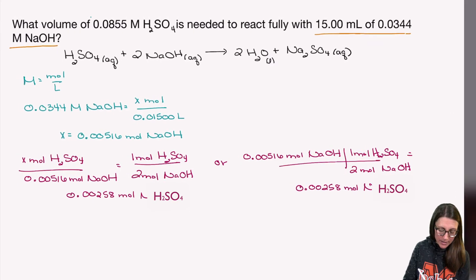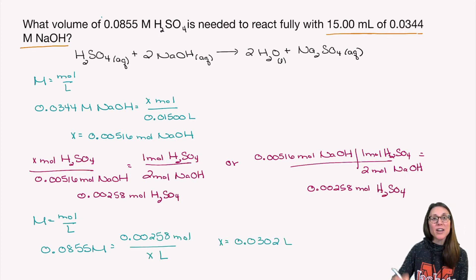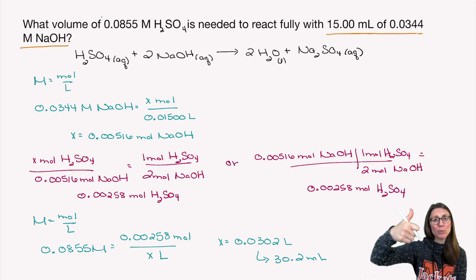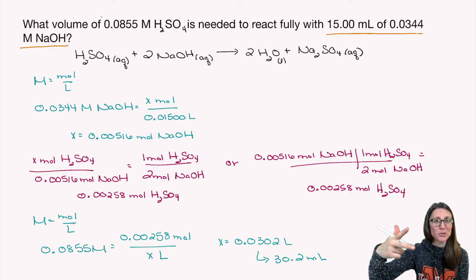So I know in this case that the molarity is 0.0855 molar. We know the moles. So when I rearrange this equation and solve for x, I find that I get 0.0302 liters. This is 30.2 milliliters. If the question asks for milliliters, make sure you convert it. Otherwise, you can give me either liters or milliliters. Before I leave this, quick recap: molarity equation, coefficient for the mole ratio, molarity equation. That's what we're doing for this.